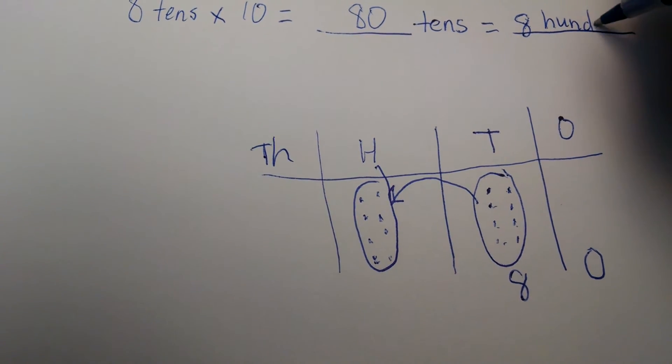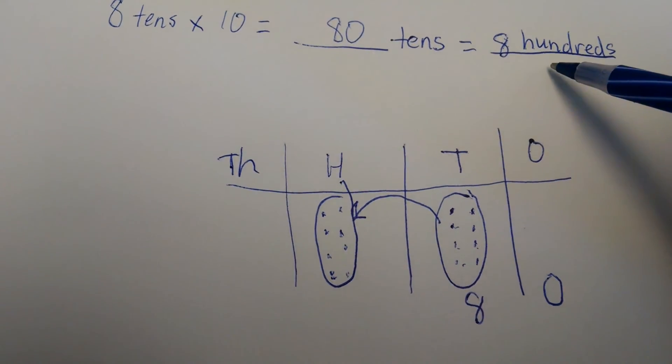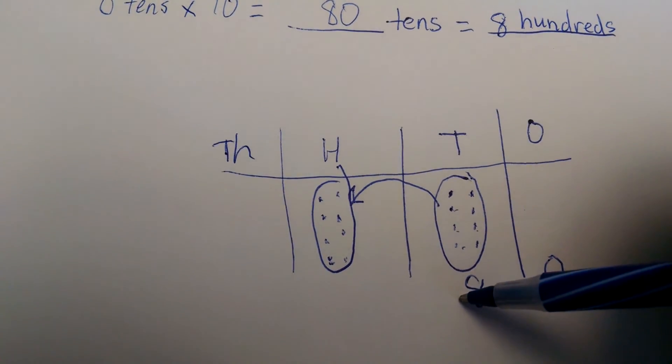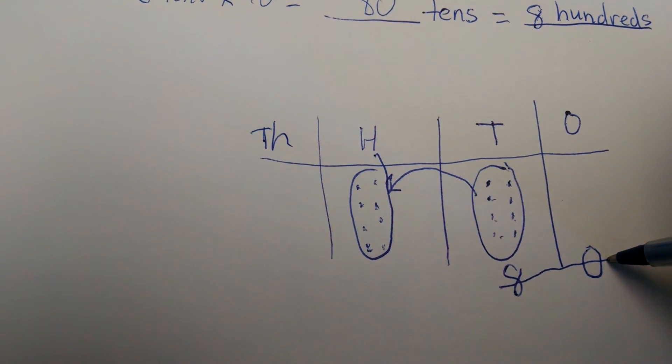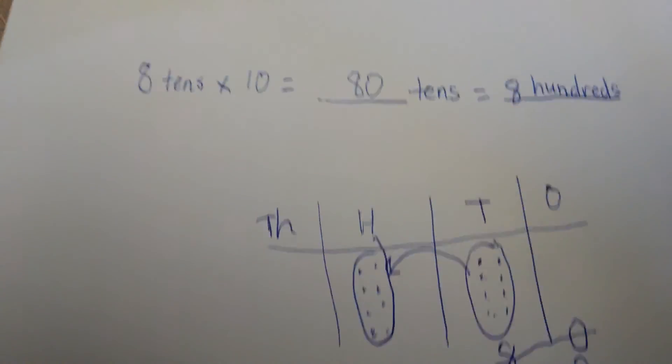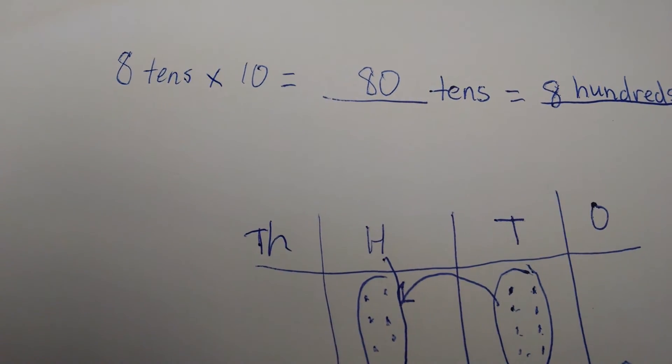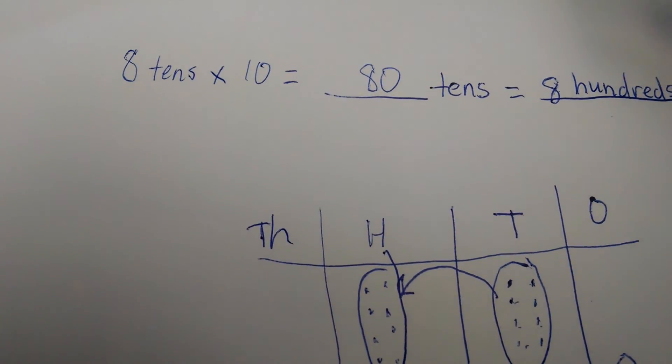So now I had 80, now it's 800. And the concept is: any time you multiply a number by 10, that digit shifts one place to the left.